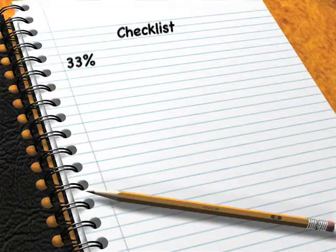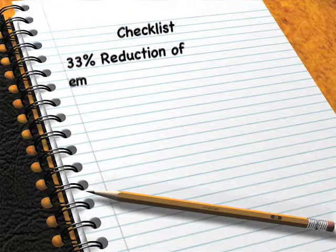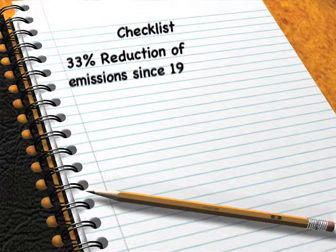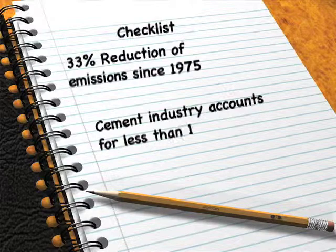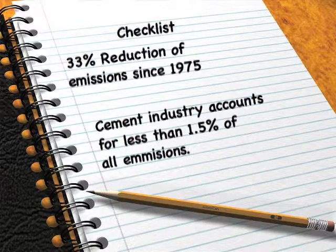Although critics of concrete cite that manufacturing of cement is energy intensive and produces carbon dioxide, the industry has addressed this issue by significantly reducing its carbon dioxide output. There has been a 33 percent reduction in carbon dioxide output since 1975 according to the Portland Cement Association. Today the cement industry accounts for less than 1.5 percent of total carbon dioxide emissions in the U.S.